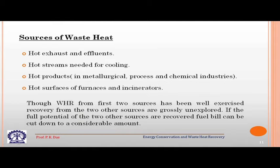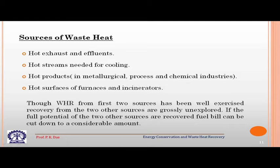I like to start with the last slide shown in the previous class, where we showed the sources of waste heat. In an industry, hot exhaust and effluents contain waste heat. Hot streams that are not exhaust but are in between some process of the industry need cooling, and there we have potential for recovering certain amounts of energy. Then hot products, which are common in metallurgical processes and chemical industries, and hot surfaces of furnaces and incinerators — this is a generalized view from where we can tap energy, as these are basically processes of dumping thermal energy to the environment.